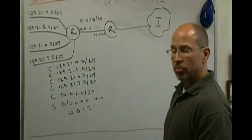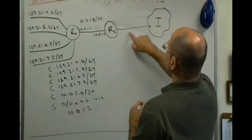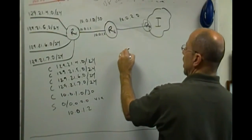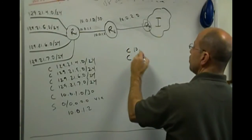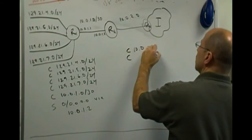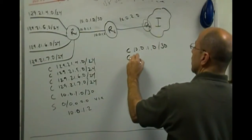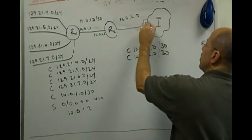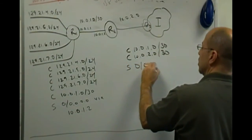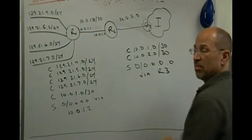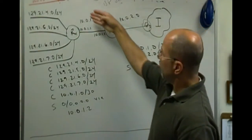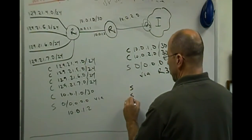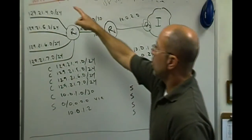What would the routing table for router number two look like? Well, let's pretend there's a router up here and we'll make this the 10.0.2 network. So router number two would have directly connected networks: 10.0.1.0 slash 30 and 10.0.2 slash 30. And if we pretend that this is R3, we would probably have a default route via R3. Then we've got to figure out a way to get to all these networks downstream, so we would also have four static routes for all those networks.